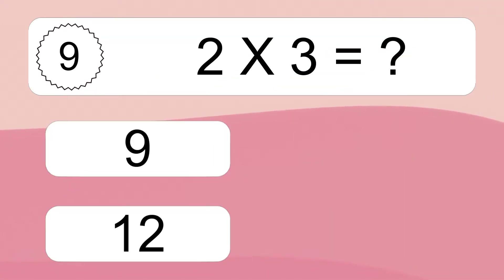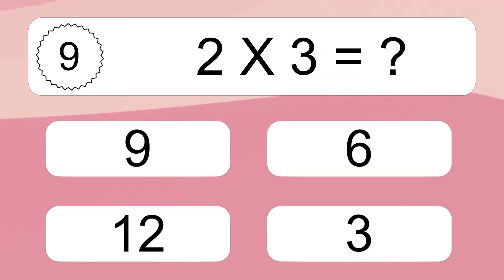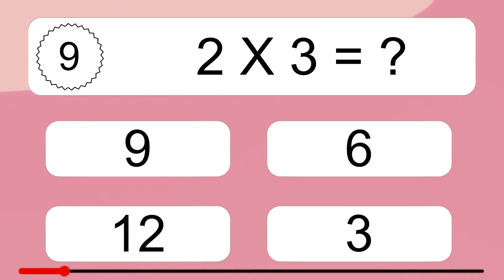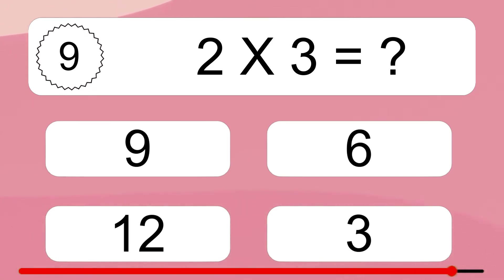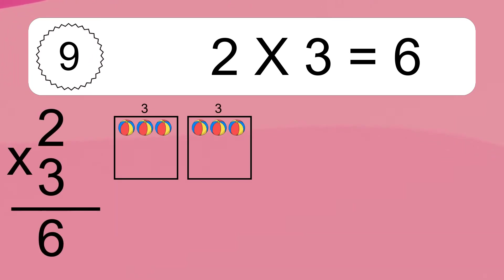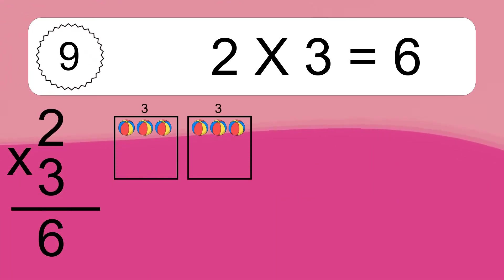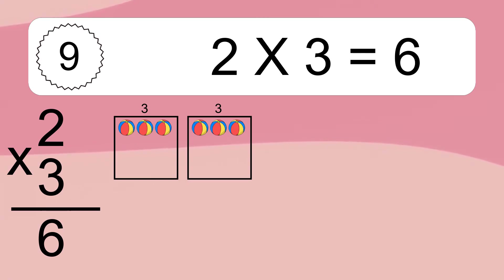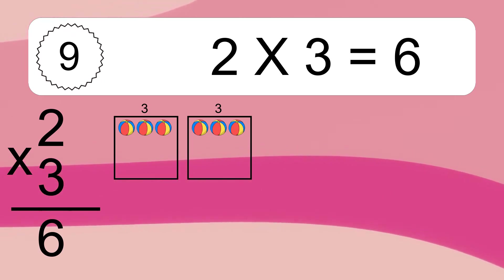2 times 3 equals what? 2 times 3 equals 6. We have 2 boxes and each box has 3 colorful balls inside. If you count all the balls in all the boxes together, you will have 2 times 3 balls. This equals 6 balls.